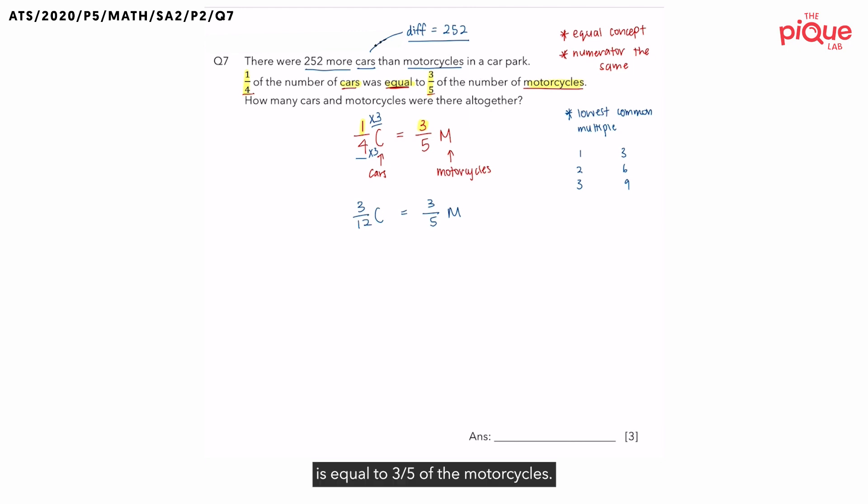So, 3 out of 12 of the cars is equal to three-fifths of the motorcycles. Let's take a look at our numerators now. Are they the same? Yes, they are the same. But we are not done.